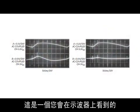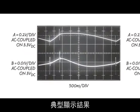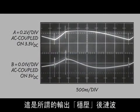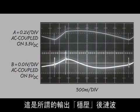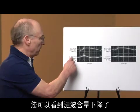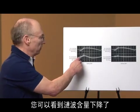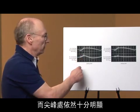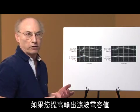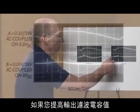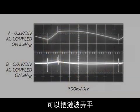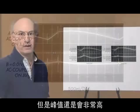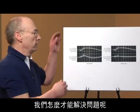This is a typical display that you'll see on an oscilloscope. This is the input ripple; this is the output so-called regulated ripple. You can see that the ripple content is down, but the spikes are very much in evidence. If we increase the value of the output filter capacitor, we flatten out the ripple, but the spikes pretty much stay the same. How do we get rid of these things?